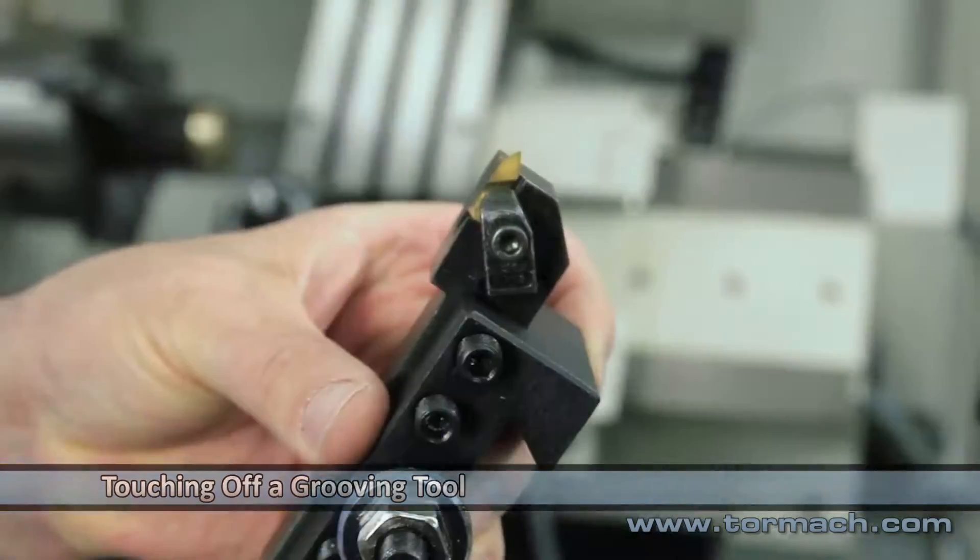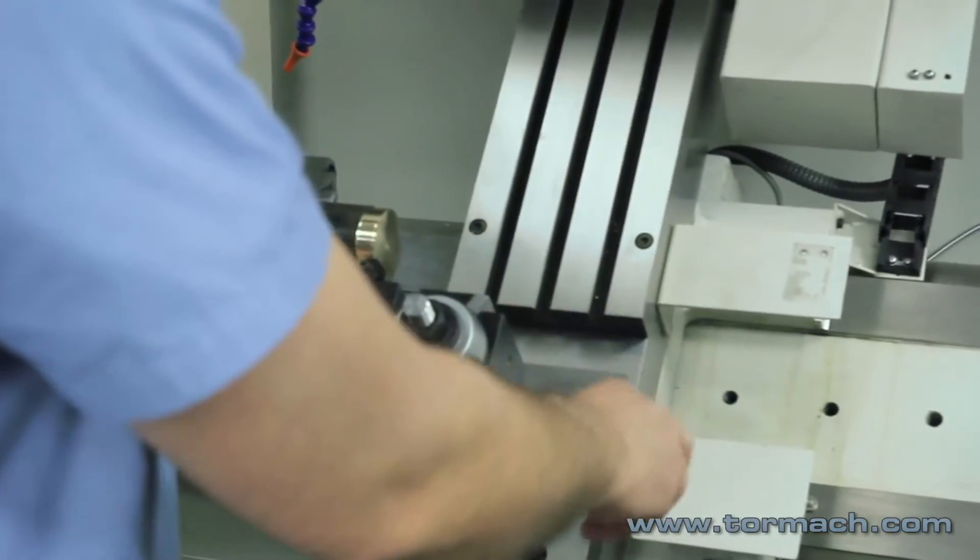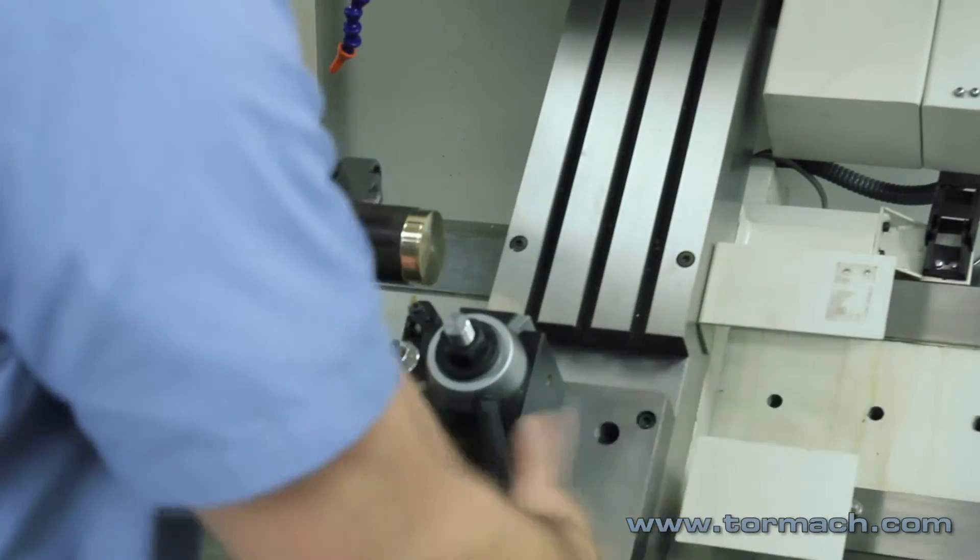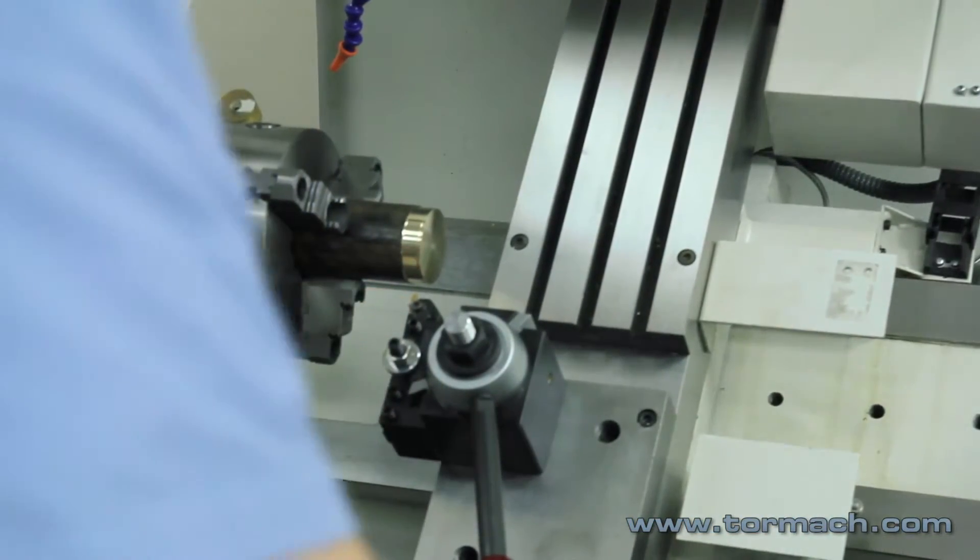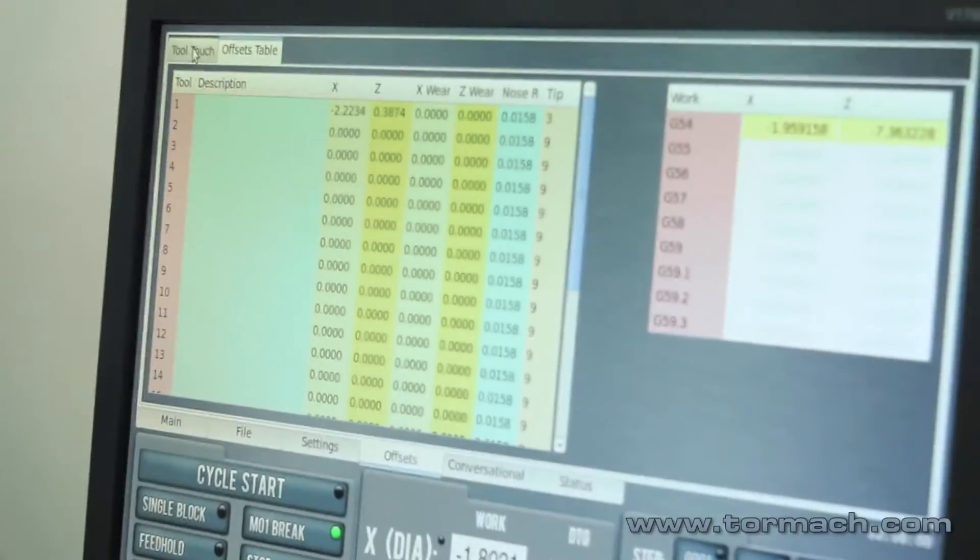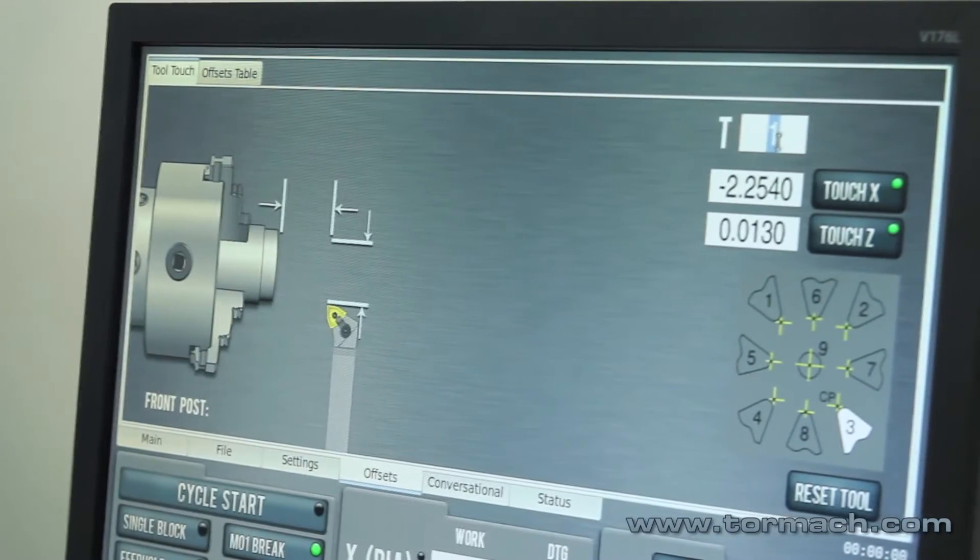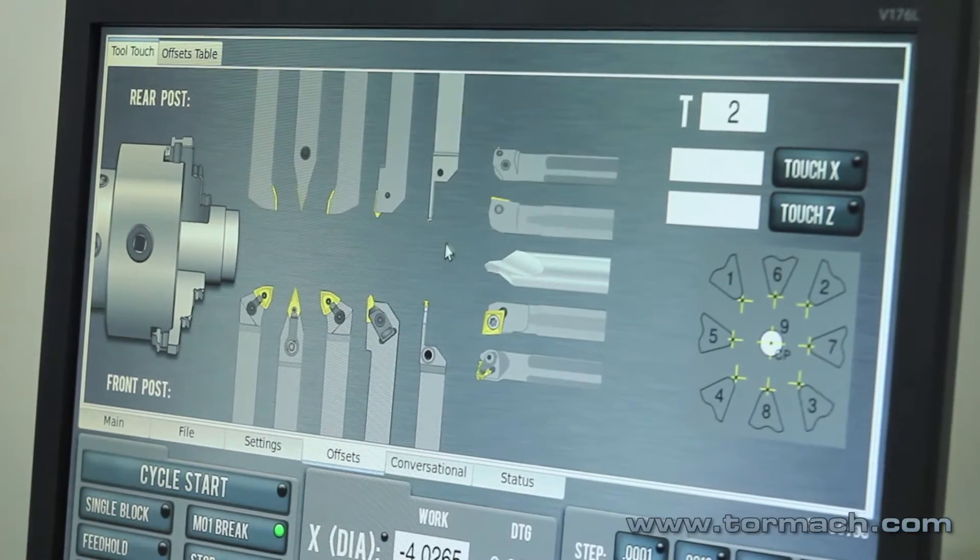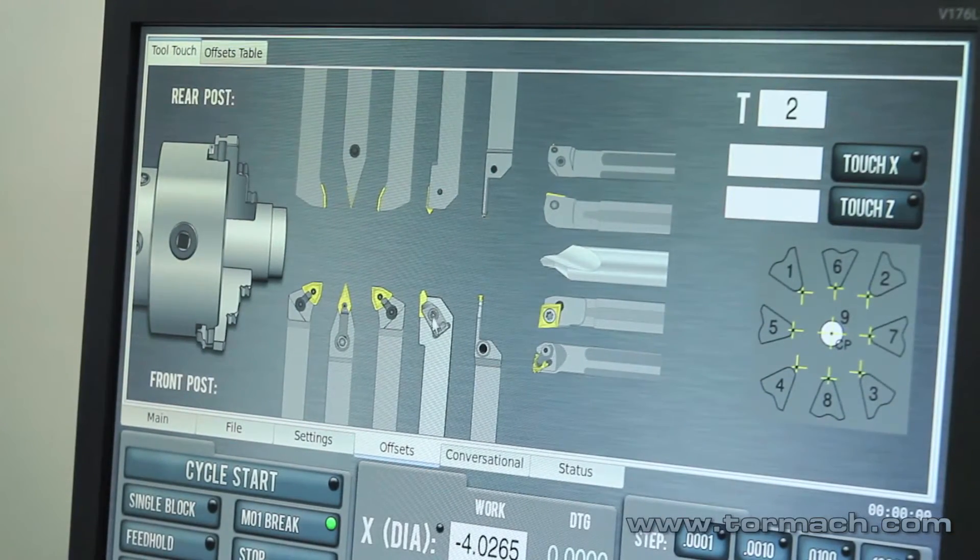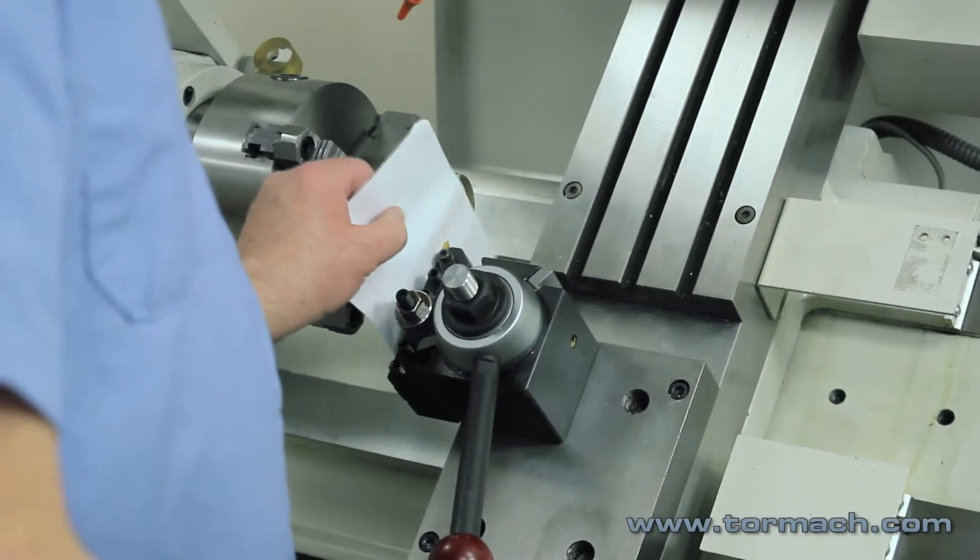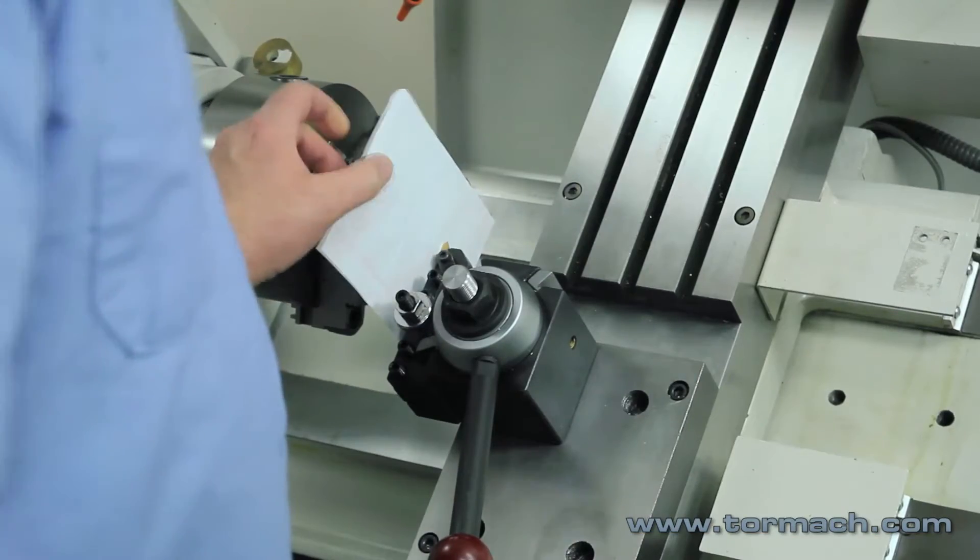Now we'll touch off a grooving tool. Now we'll go touch that tool off. Go to tool touch page. Tool two. Pick the cutter geometry. Come in on the side of it again.